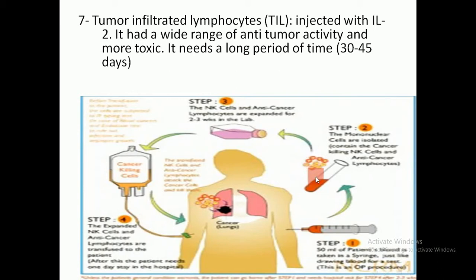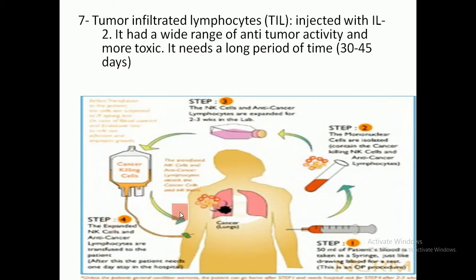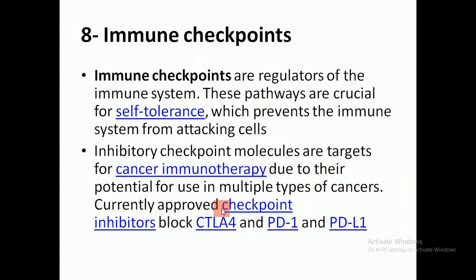From the tumor mass, we take the lymphocytes that have infiltrated the tumor tissue, culture them with interleukin-2, and then re-infuse them to the patient. These cells are more cytotoxic to tumor cells. This is called the TIL cell — lymphocytes removed from the tumor mass, cultured with interleukin-2 to become more active, proliferative, and cytotoxic, then re-injected to specifically attack residual tumor cells remaining after surgery, chemotherapy, or radiotherapy.